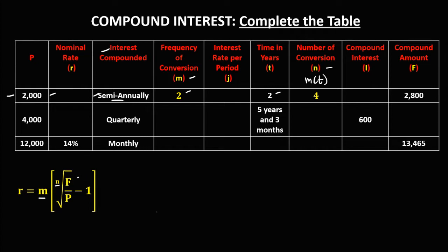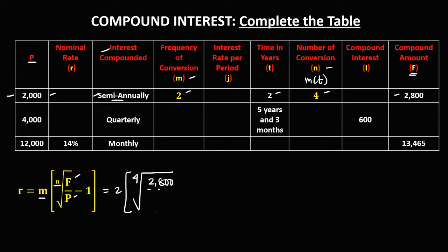For the compound amount F and the principal P, to solve for the nominal rate we have: M times the N-th root of the compound amount over the principal, then minus 1. Since N is equal to 4, we take the 4th root of 2,800 divided by 2,000, then minus 1.